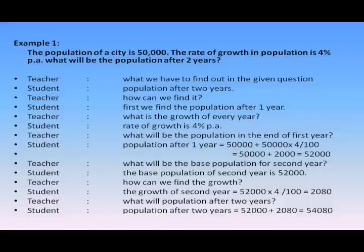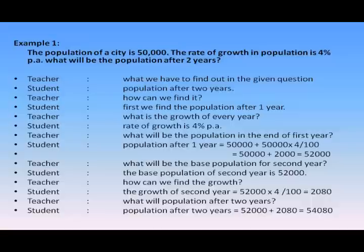The teacher asked the students how can we find it. The students replied, first we find the population after 1 year. The teacher asked, what is the growth every year? The students replied, the rate of growth is 4% per annum. Then the teacher asked, what will be the population at the end of the first year? The students replied, population after 1 year: 50,000 plus 50,000 × 4 ÷ 100 = 50,000 + 2,000 = 52,000.